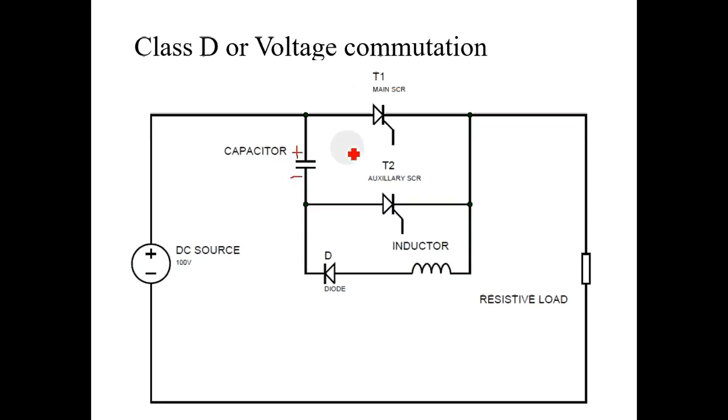To start the operation of the circuit, we have to fire the main SCR T1. When we fire the main SCR T1, current flows from positive plate of a battery through main SCR, through resistive load and back to negative plate of a battery.